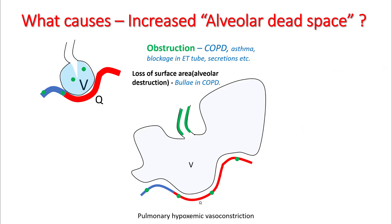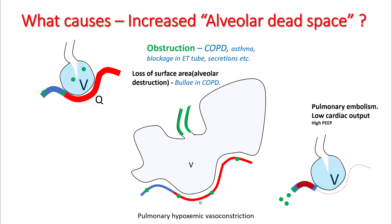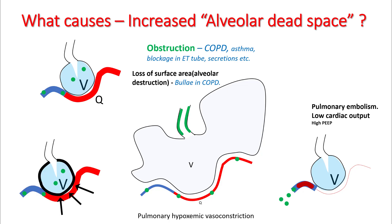What causes increased alveolar dead space? The commonest reason is obstruction such as seen in COPD and asthma. In these patients, your ventilation to the alveoli decreases and your lungs cause pulmonary hypoxemic vasoconstriction, so even though ventilation has dropped, perfusion has dropped by much more — these alveoli have very high V/Q ratios. Other reasons include loss of surface area, such as bullous lesions in COPD, and decreased perfusion to the alveoli as seen in low cardiac output or pulmonary embolism. Problems with the alveolo-capillary membrane do not usually cause dead space because carbon dioxide is easily diffusible.